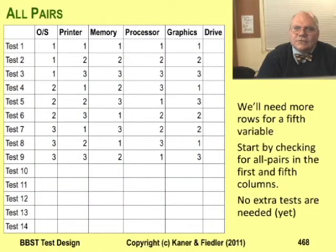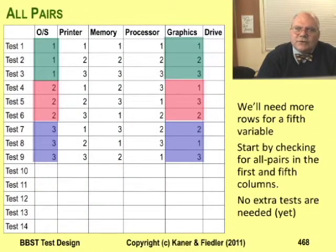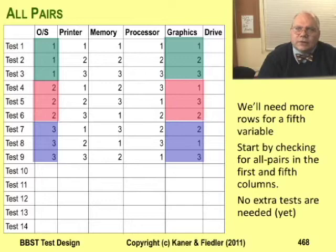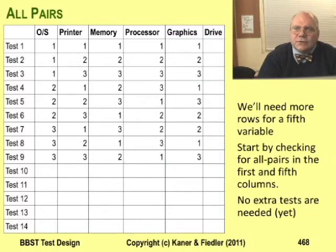Adding a fifth variable is a little more difficult. Start by checking operating system and graphics — that works. You have the ones with one, two, and three; the twos with one, two, and three; and the threes with one, two, and three. So far, so good.